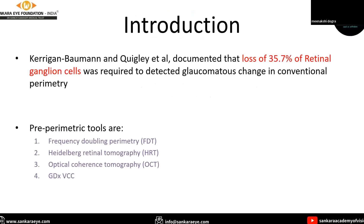Loss of 35.7% of retinal ganglion cells was required to detect glaucomatous changes in conventional visual perimetry. Thus arose the need to devise technology for pre-perimetric detection of glaucoma.